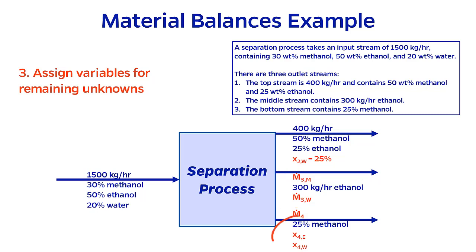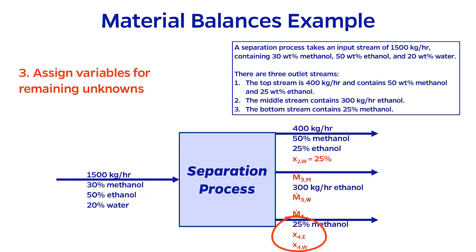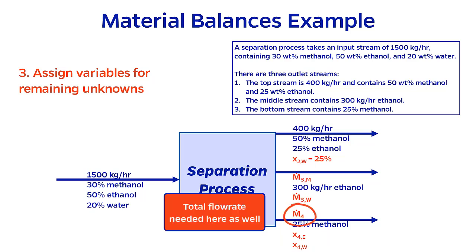In the bottom stream, we are back to the composition convention. But again, 25 percent is not equal to 100 percent, so we have the other two components present here as well. However, unlike the top stream, we cannot solve for the compositions of ethanol and water just yet. We know that they combine to be the other 75 percent of the stream, but we don't know the breakdown. Compositions by themselves aren't enough to be able to calculate the amount either, so we need a variable to fill in for the total flow rate. I am going to call it M4.